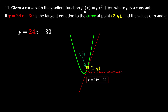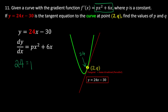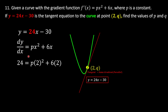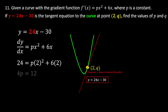Using the gradient function px² + 6x with x = 2 and gradient = 24, we substitute: 4p + 12 = 24. Moving 12 to the right: 4p = 12, so p = 3. We have found the value of p, which is 3.